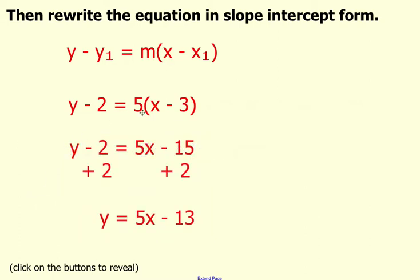When you distribute the 5 to the X, it becomes 5X. When you distribute 5 to the negative 3, it becomes negative 15. Remember you're using multiplication when you use distributive property.